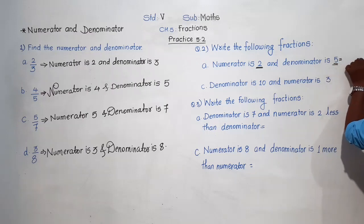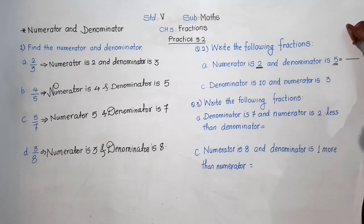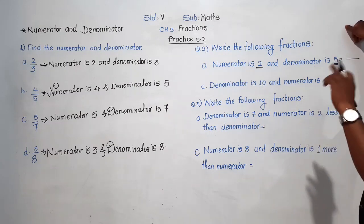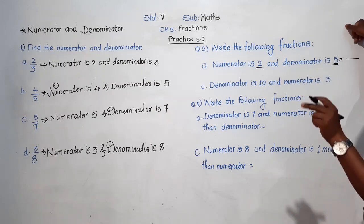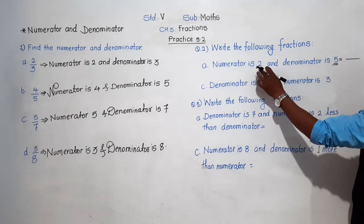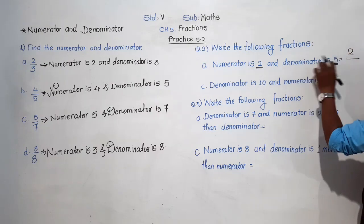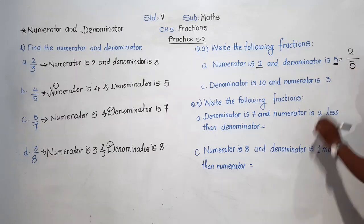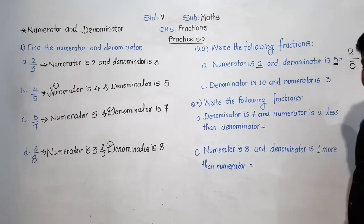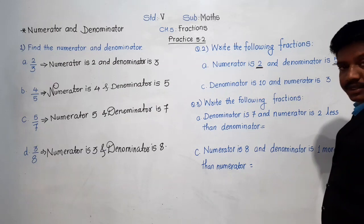When we write the fraction, first draw the bar. The numerator goes above the bar and the denominator goes below. So numerator is 2 — written above — and denominator is 5 — written below the bar. So the fraction is 2 upon 5.